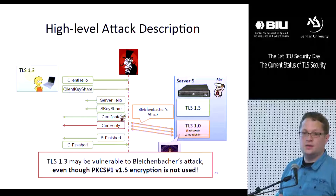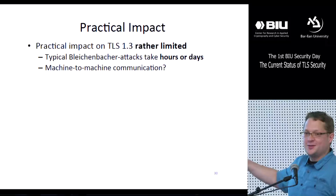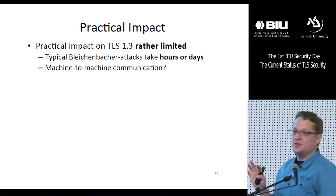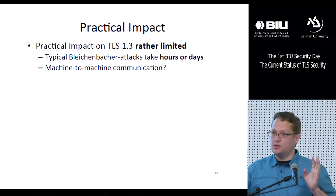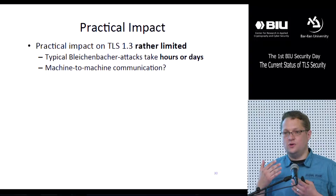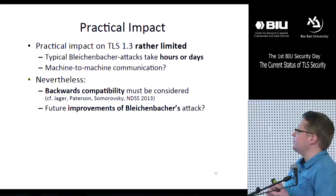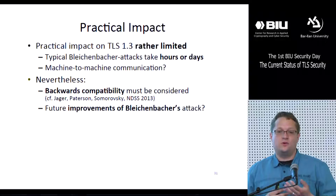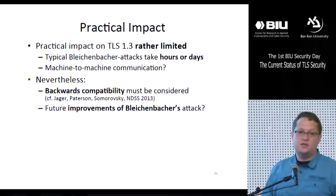This means TLS 1.3 is somewhat surprisingly vulnerable to Bleichenbacher's attack, even though it doesn't use PKCS1 v1.5 encryption, in settings where TLS 1.3 runs in parallel with older versions — a very practical assumption. The practical impact on TLS 1.3 is rather limited in general, because a typical Bleichenbacher attack takes hours, days, and millions of connections. There may be artificial examples like machine-to-machine communication where this is harmful, but certainly not for browser users. It still shows that backwards compatibility must be considered. There can also be future improvements or new side channels enabling more efficient attacks, so we may be just one or two ideas away from a practical attack.